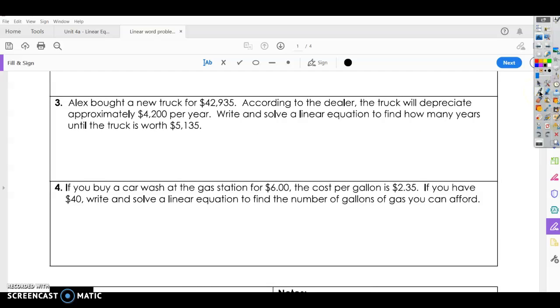Number 4. If you buy a car wash at the gas station for $6, the cost per gallon is $2.35. That's per gallon, so that's going to change. If you have $40, write and solve a linear equation to find the number of gallons of gas you can afford.